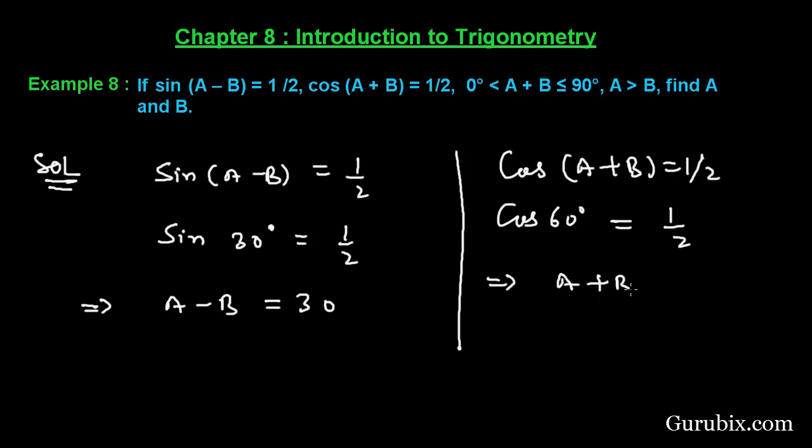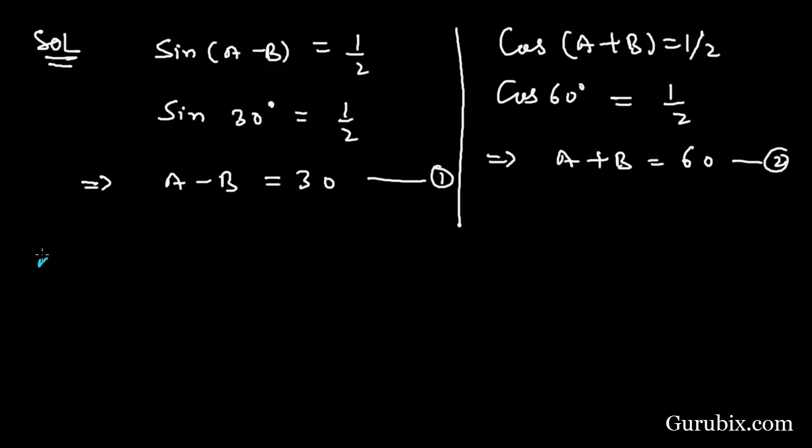This is our equation number 1 and this is our equation number 2. Now we shall add equation number 1 and equation number 2. We have A - B equals 30° and A + B equals 60°.